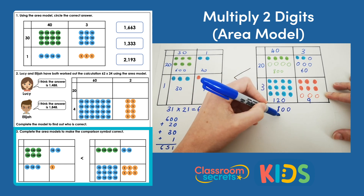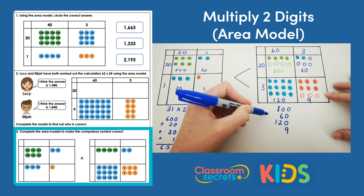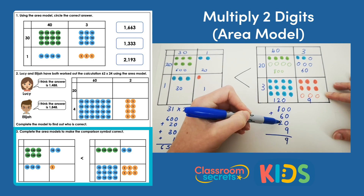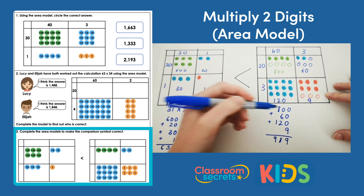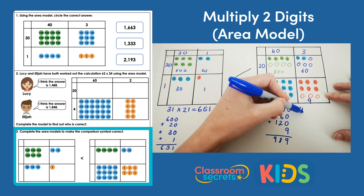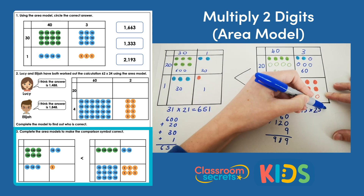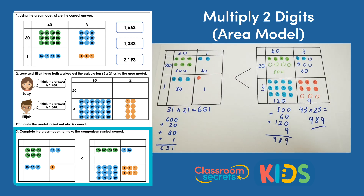So 800 add 60 add 120 add 9 gives us 989. So 43 times 23 equals 989. Now this statement is true because the answer to the calculation on the right, 989, is greater than the answer to the calculation on the left, 651.